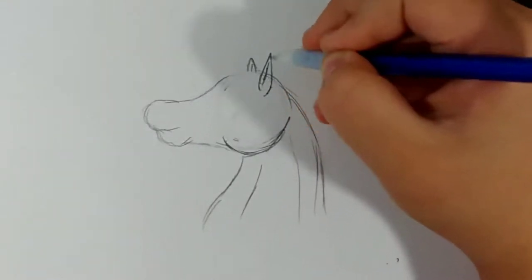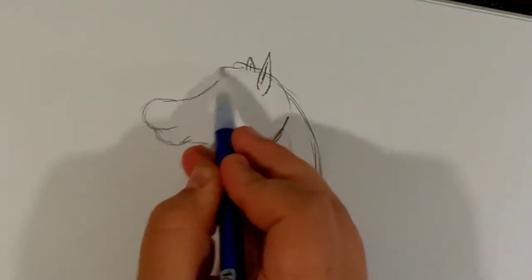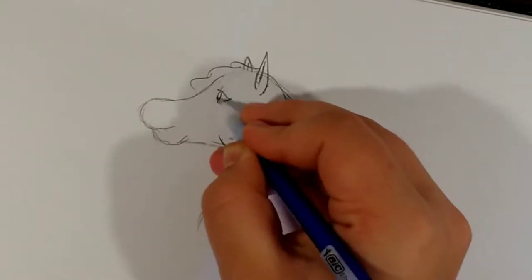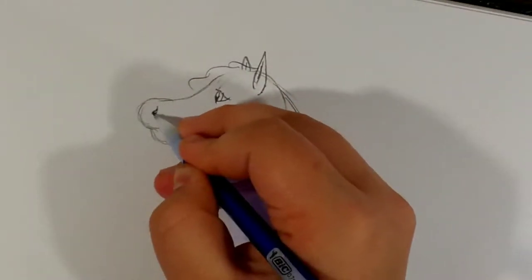And then you draw the ears and erase those little bits that you don't need. Then start with the forelock, and I normally do the eye first and the ears, and then the nose.